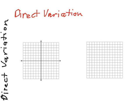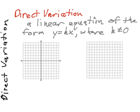As we begin our study of linear equations and functions, the first type that we're going to run across are what are called direct variations. Now a direct variation equation is any linear equation of the form y equals kx, where k does not equal zero.